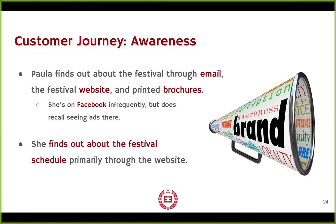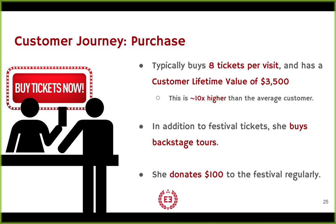One key variable was the channel that Paula uses to become aware of both the festival and the schedule. She's primarily digital — email, website, Facebook. Brochures are in there; this organization does all kinds of traditional print, radio, and television. But if you want to reach Paula, email is the best and the website is next because she's also using it to find the schedule. If you set up a funnel on the website schedule page, you can funnel Paula into higher or more frequent purchase and then measure, test, and validate it — which is going to be really hard with brochures, billboards, or radio.